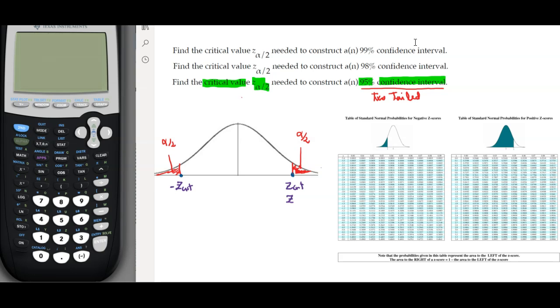There is only one value which is called Z alpha over 2, and that will be the value on the right side. Z alpha over 2 is always located on the right side and is always associated to the right tail of alpha over 2.